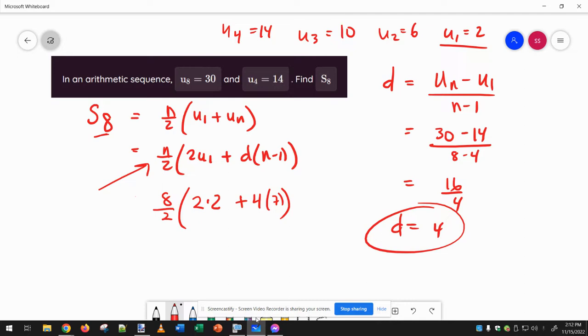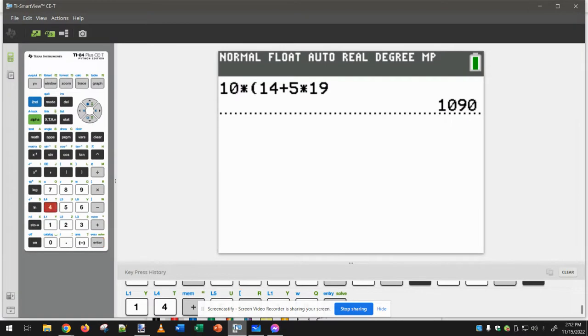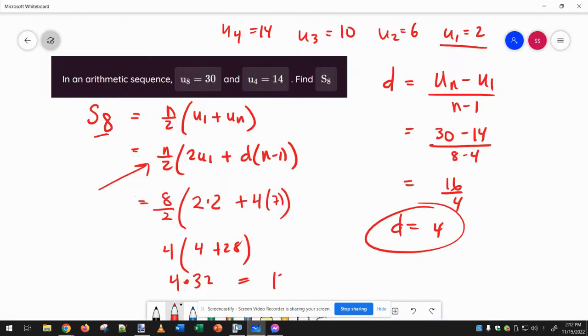And then I can calculate. 8 over 2 is 4. 2 times 2 is 4. 4 times 7 is 28. So I got 4 times 32. So now I can do 4 times 3, and so the sum of the first eight terms is 128.